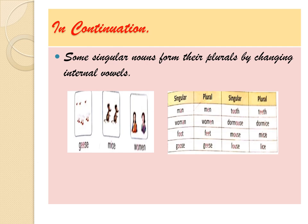Rule six: some singular nouns form their plural by changing an internal vowel. Vowels are A, E, I, O, U. For example: man/men — M-A-N changes to M-E-N, where E is the internal vowel. Woman/women, foot/feet, goose/geese, tooth/teeth, dormouse/dormice, mouse/mice, louse/lice.